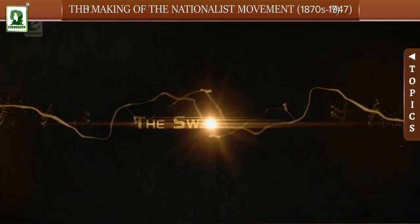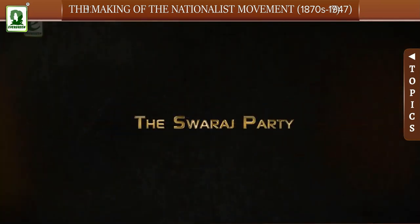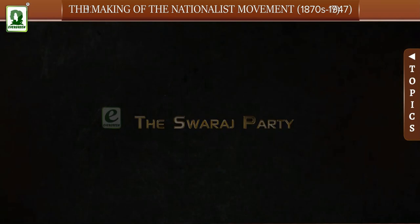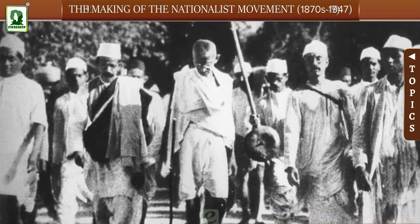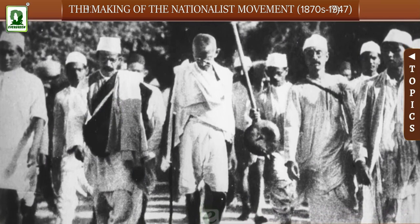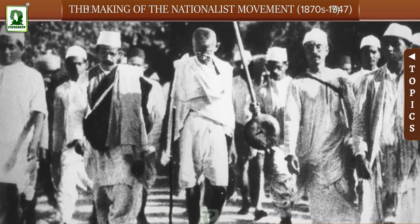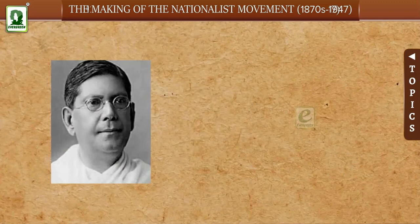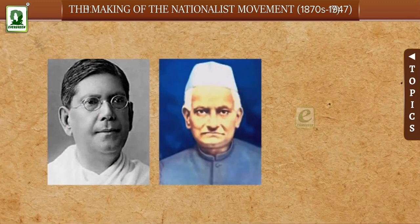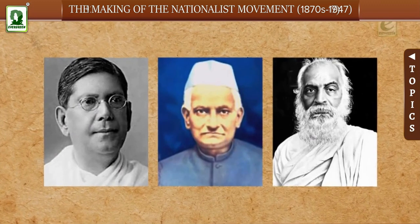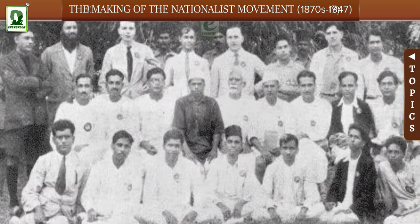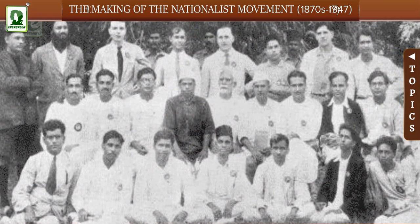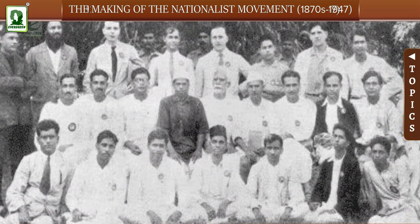The Swaraj Party: After calling off the Non-Cooperation Movement, the Congress was divided into two groups. Pro-changers included leaders such as Chittaranjan Das, Motilal Nehru, and Vithalbhai Patel. They formed the Swaraj Party in 1923 and argued that the party should fight elections to the councils and join the government.